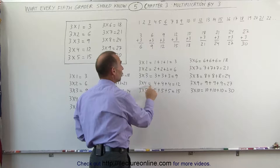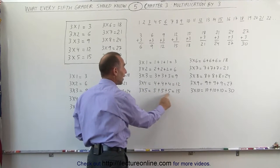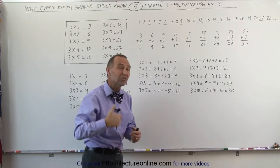3 times 4, you have 3 fours. Add them together, you get 12. 3 times 5, you have 3 fives. Add them together, you get 15, and you see the pattern.